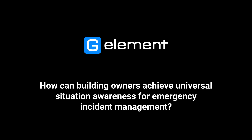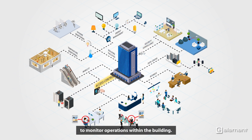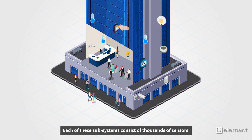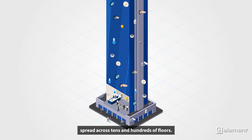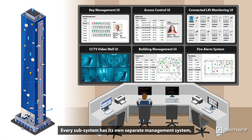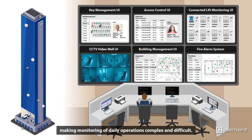How can building owners achieve universal situation awareness for emergency incident management? Buildings nowadays are fitted with multiple subsystems to monitor operations within the building. Each of these subsystems consists of thousands of sensors spread across tens and hundreds of floors. Every subsystem has its own separate management system, making monitoring of daily operations complex and difficult.